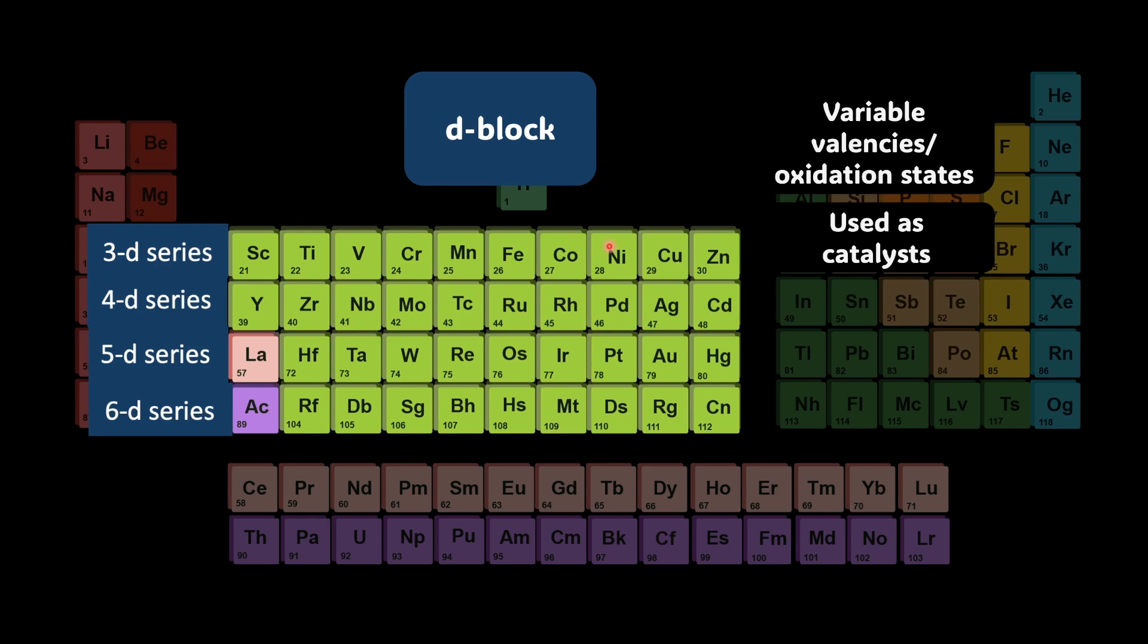Nickel is another catalyst you will study in organic chemistry in catalytic hydrogenation. There are many elements like platinum, palladium that you will hear a lot in organic chemistry being used as catalysts. All of these are D block elements.